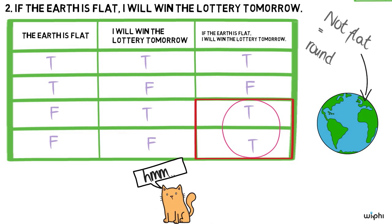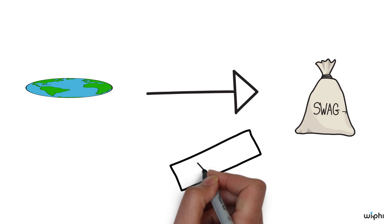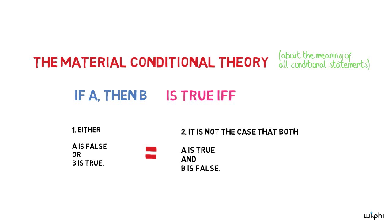Does this seem right to you? If you're like me, you'll be inclined to say no. Why is this? Well, here's the simple answer. It seems that the lack of the right kind of connection between the antecedent and consequent of two is what makes it false. There's just no connection between the earth being flat and my winning the lottery tomorrow.